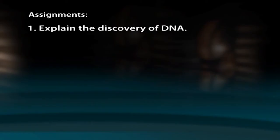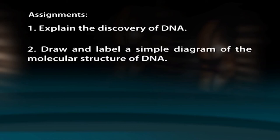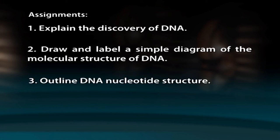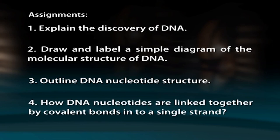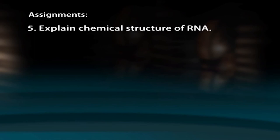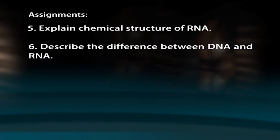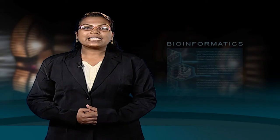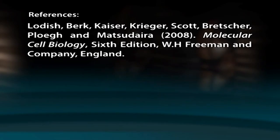Assignments for further study: First, explain the discovery of DNA. Second, draw and label a diagram of the molecular structure of DNA. Third, outline DNA nucleotide structure. Fourth, explain how DNA nucleotides are linked together by covalent bonds into a single strand. Fifth, explain the chemical structure of RNA. Sixth, describe the differences between DNA and RNA. For further studies, refer to 'Molecular Cell Biology' written by Lodish, Burke, Kaiser, Krieger, Scott, Bretscher, Ploegh, and Matsudaira.